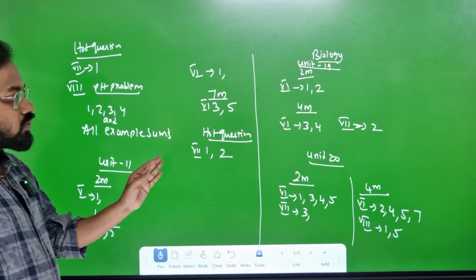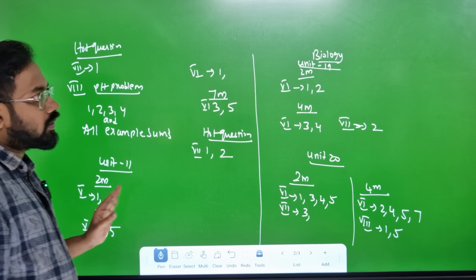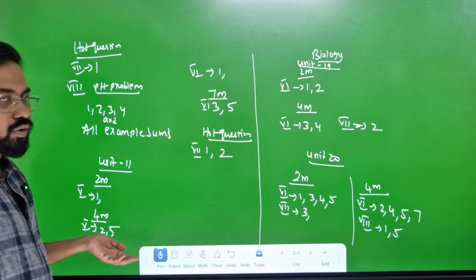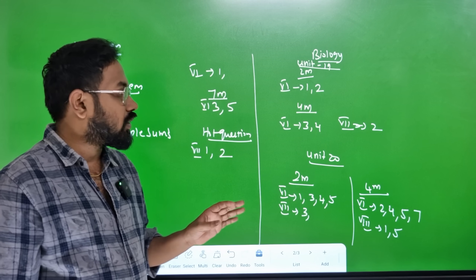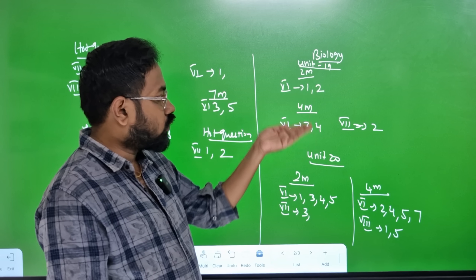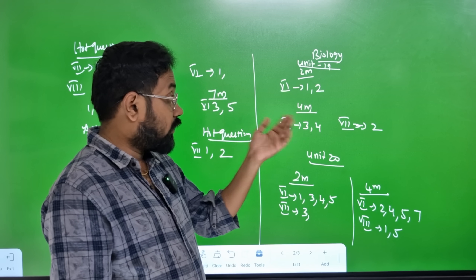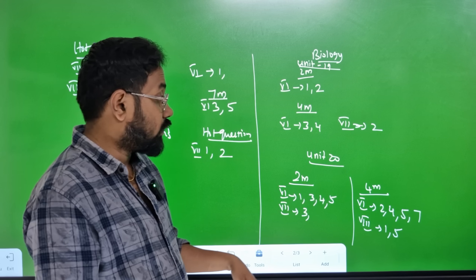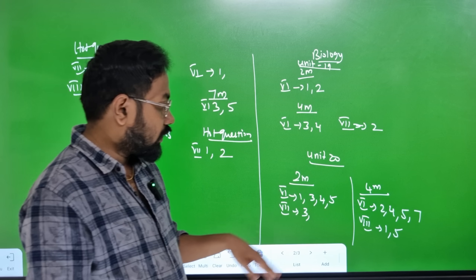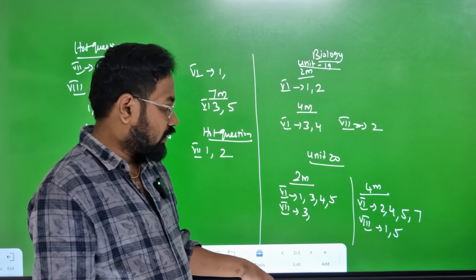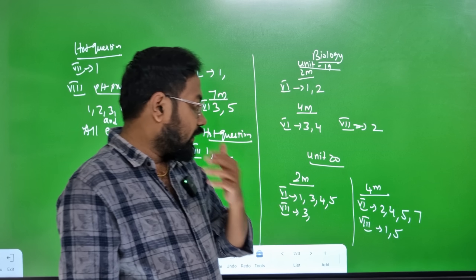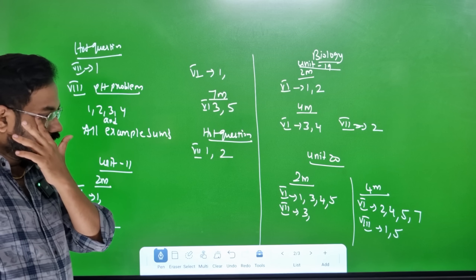In the hearts question, you can try it. In biology, you can try it. In unit 19, you can try it. The marks breakdown is 2 mark, 4 mark, 2, 4, 5, 7.